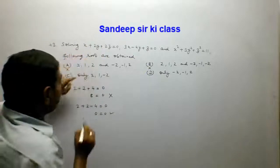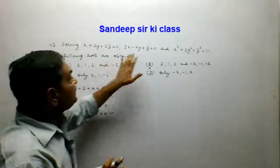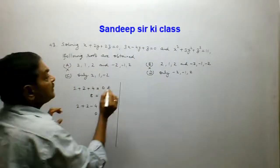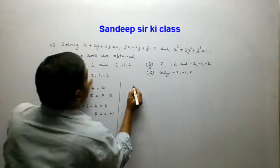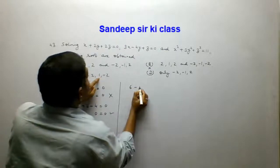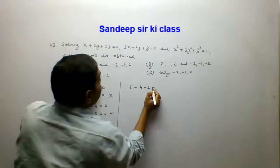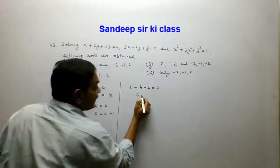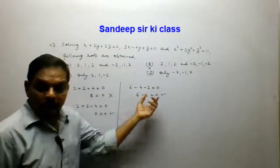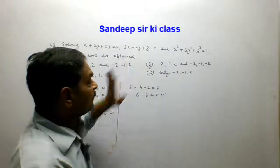Now putting these values into the second equation gives 6 minus 4 minus 2 equals 0, that is 6 minus 6 equals 0, which is true. So option C is also satisfying the second equation.